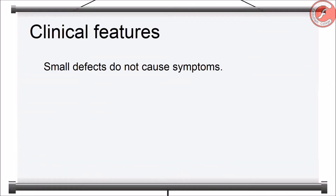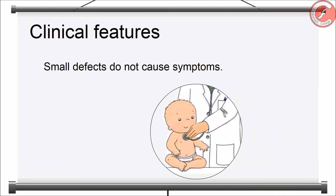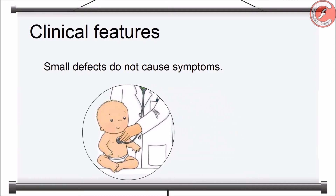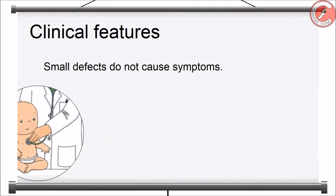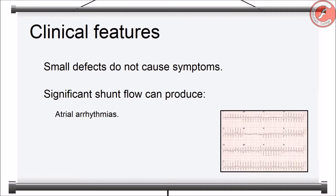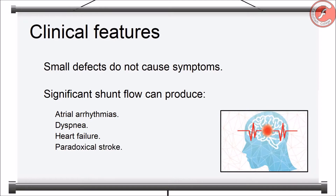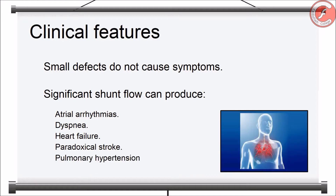Most atrial septal defects are small and do not cause symptoms in infancy and childhood. They commonly come to attention because a murmur is detected on physical examination or as an incidental finding on echocardiogram. Many can close spontaneously over the years. However, most patients with significant shunt flow (QP:QS > 2:1) will become symptomatic and require surgical correction by age 40. Clinical manifestations can include atrial arrhythmias, dyspnea, heart failure, and rarely stroke due to paradoxical embolization. Pulmonary hypertension and Eisenmenger syndrome are possible but uncommon.